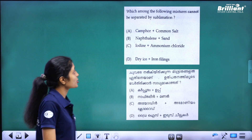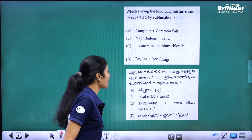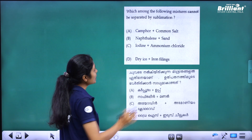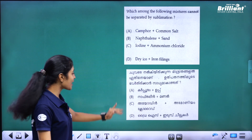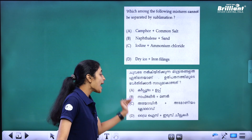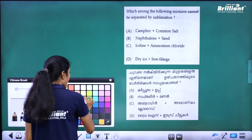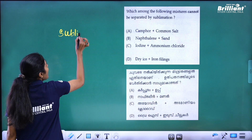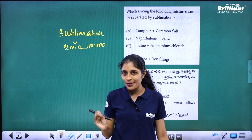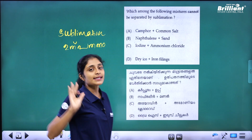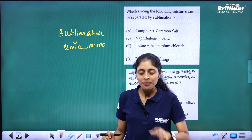Second question: which among the following mixtures cannot be separated by sublimation? Options are: camphor plus common salt, naphthalene plus sand, iodine plus ammonium chloride, dry ice plus iron fillings. Sublimation is the process where a solid substance goes directly to the gaseous state without passing through the liquid state.